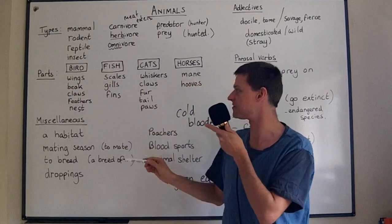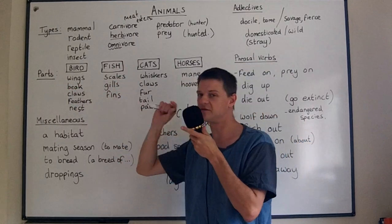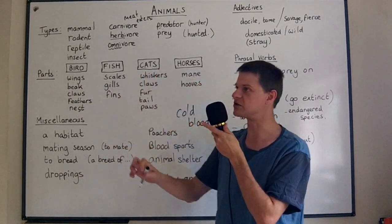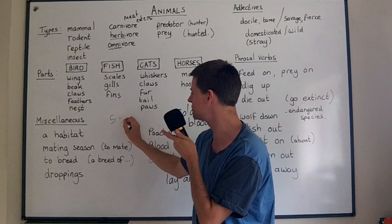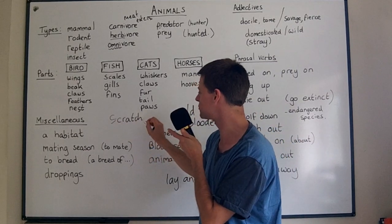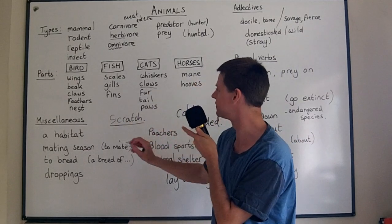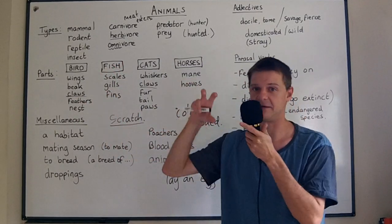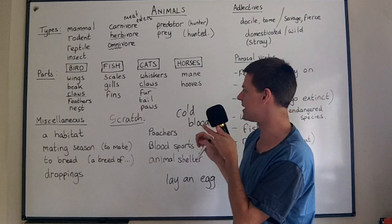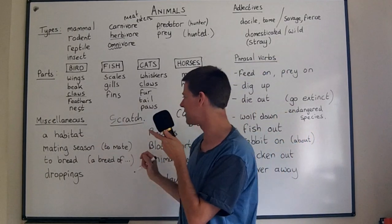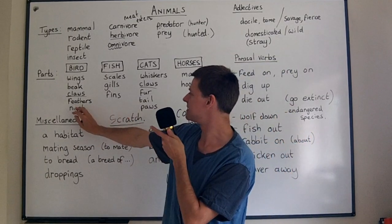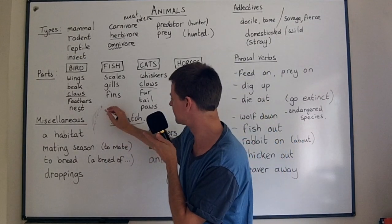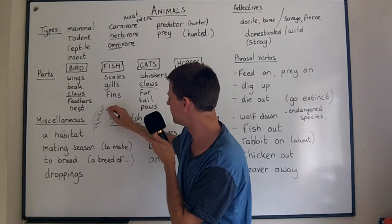Now, parts of different animals. Birds have wings to fly. They have a beak, which is what we call a bird's mouth. They have claws, which they could scratch with — just as cats scratch with their claws. A bird uses its claws for maybe taking a worm out of the ground, pulling it out. And they're covered in feathers.